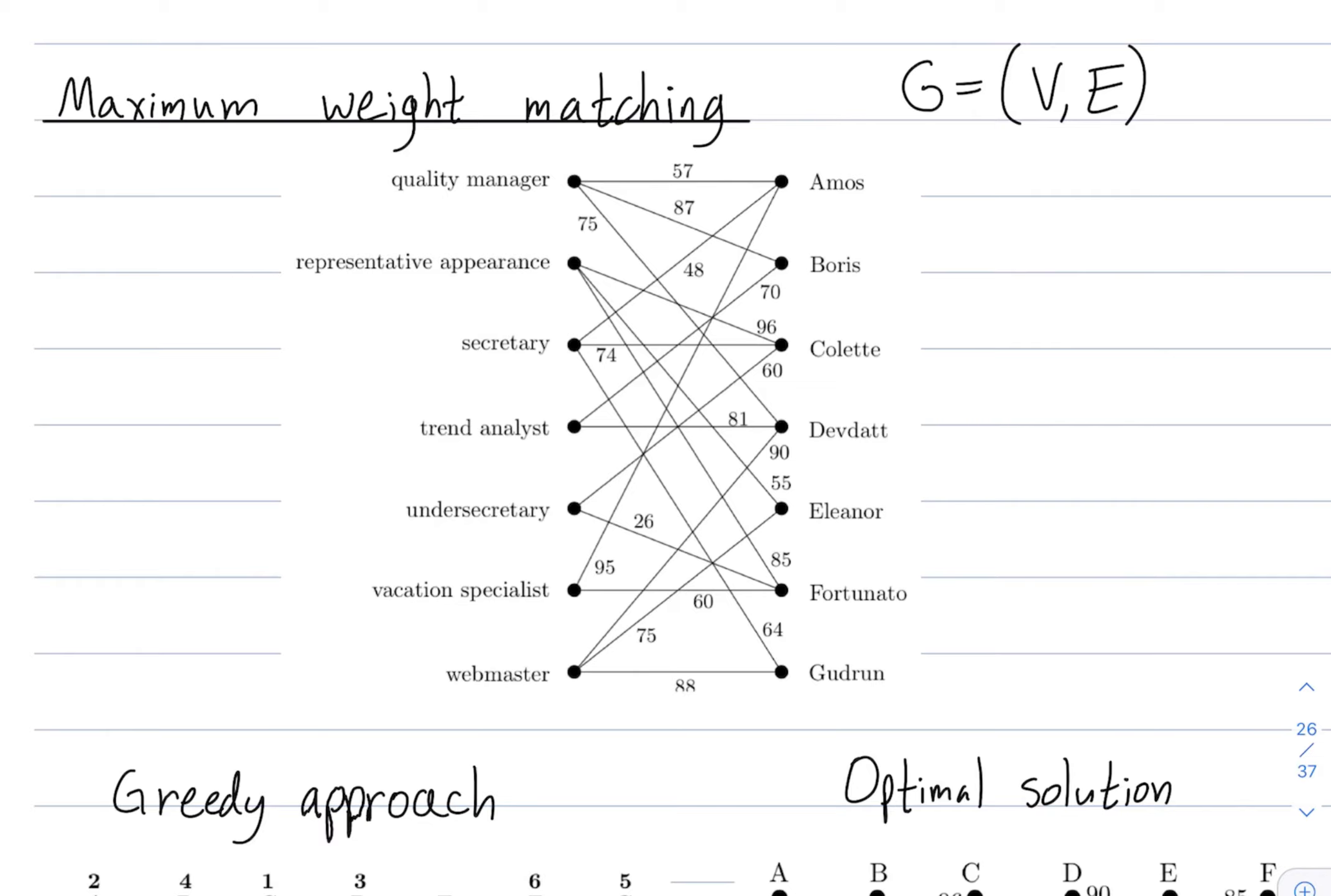So the optimization problem here is you want to match these seven people to these seven roles in a way where you maximize the total sum of effectivenesses. So you want to maximize the total sum of effectiveness when you assign people to roles.